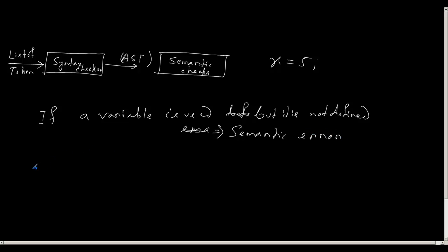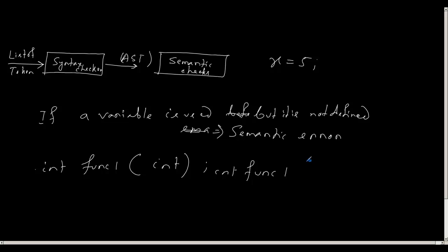Similarly, suppose I have a function whose prototype declaration is int func1 taking an int argument, but in the function body I declare a char variable c and return c. That is wrong. The compiler will not automatically typecast it to int; instead it will flag a semantic error saying the return type is int but you are returning a character type.